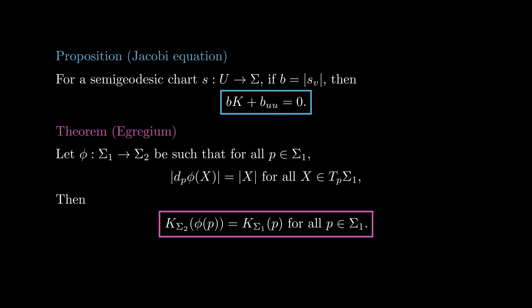The proof of this theorem is straightforward. Since phi respects the length of tangent vectors, it also respects the length of curves, meaning that it sends geodesics to geodesics, as they are the curves that locally minimize length. Therefore, it sends semi-geodesic charts to semi-geodesic charts. By the Jacobi equation, the Gauss curvature can be computed in terms of the length of vectors as V in a semi-geodesic chart, allowing us to compute the curvature on either surface with the same formula, giving us the theorem.